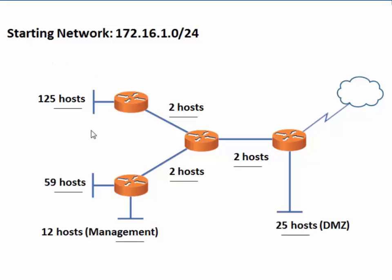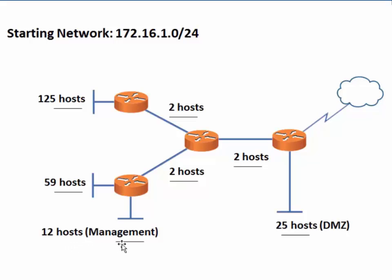125 hosts over here, 59 hosts over here. Between the routers, two hosts each. Coming off the router — that's the edge router that connects to the internet — we have a DMZ, which needs 25 hosts. And coming off of the router here, we need a 12 host network for management.